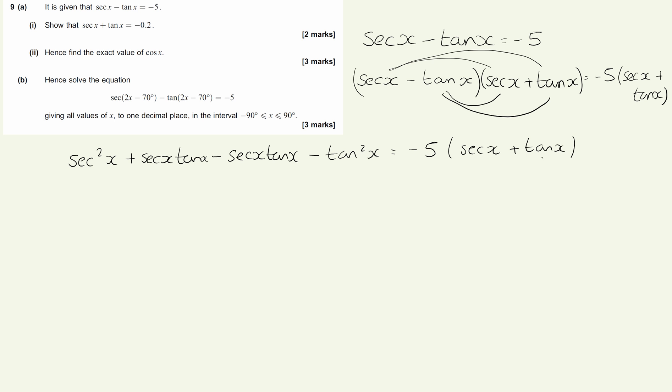And that's going to be equal to minus 5 lots of sec x plus tan x. Now, sec x plus tan x is obviously what we're looking for here. You should notice that these two terms in the middle cancel each other out, leaving me with sec squared x minus tan squared x equals minus 5 sec x plus tan x.